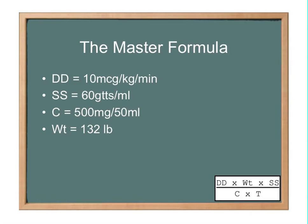Our desired dose is 10 micrograms per kilogram per minute. Our solution set is 60 drops per milliliter. Our concentration is 500 milligrams and 50 milliliters. And our patient weight is 132 pounds. Of course we have to convert that to kilograms. 132 divided by 2 is 66. The first number is 6. So we subtract that and we get 60 kilograms. Again, remember that's a very close estimate.